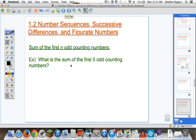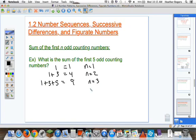Another formula: the sum of the first N odd counting numbers. The first odd number has a sum of 1. The first 2 odd numbers—1 plus 3—give us 4. So when N equals 1, we get 1. When N equals 2, we get 4. When N equals 3, that's 1 plus 3 plus 5, which is 9. When N equals 4, we get 1 plus 3 plus 5 plus 7, which is 16.